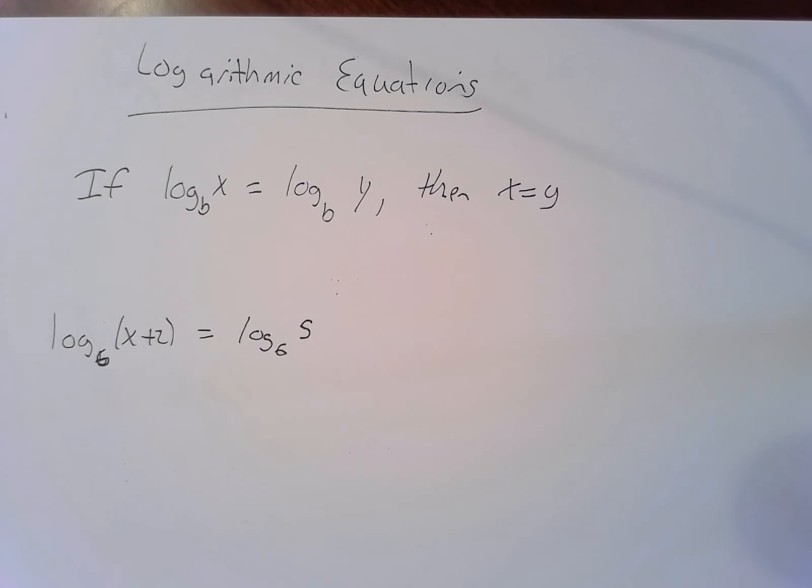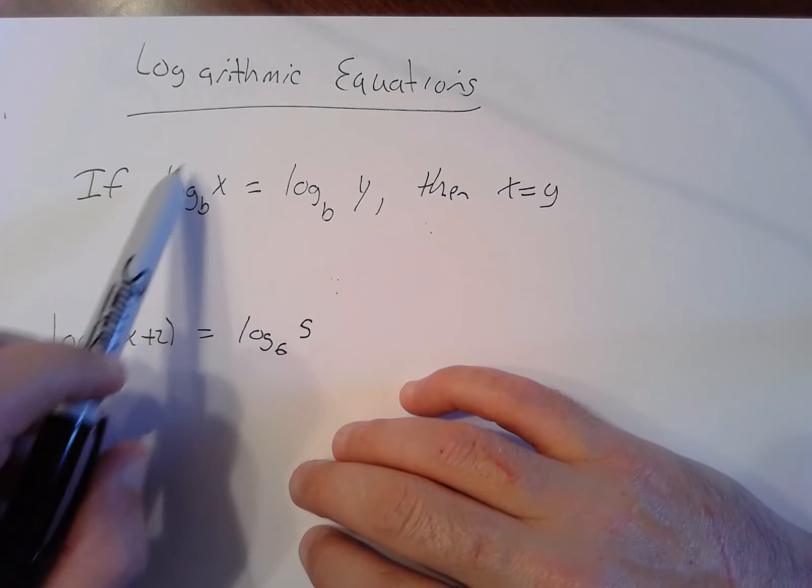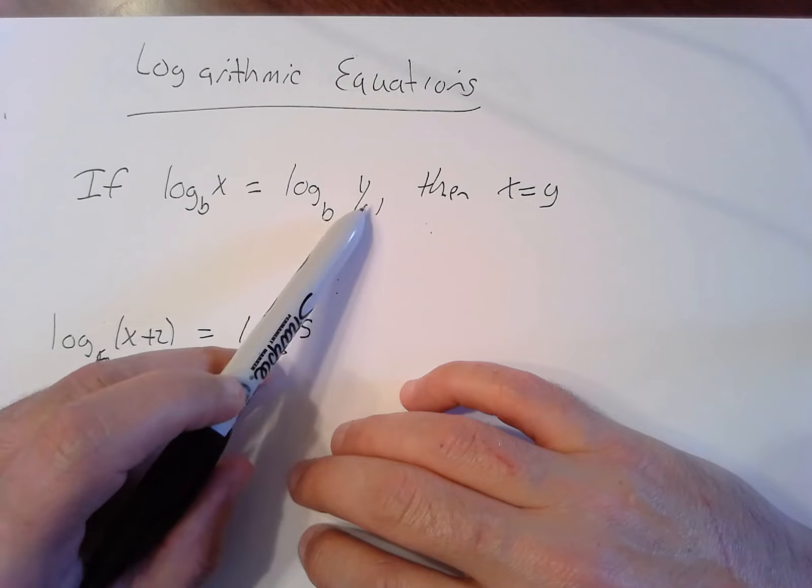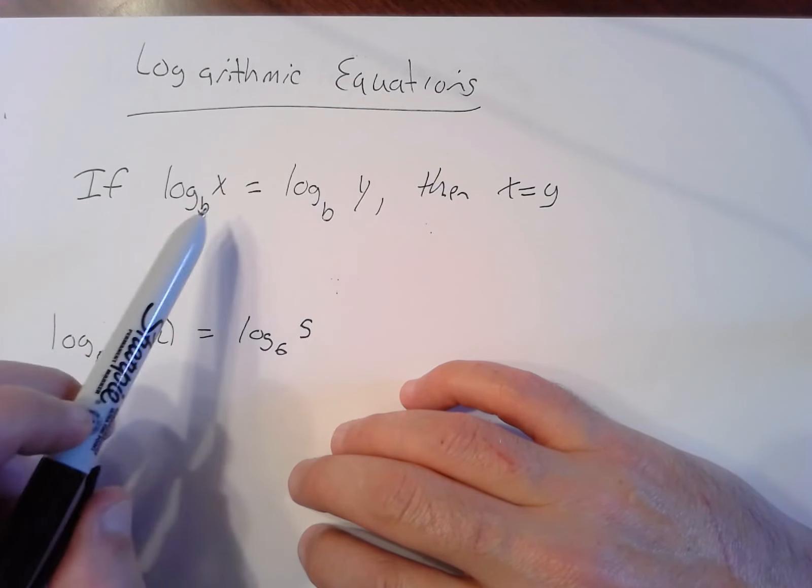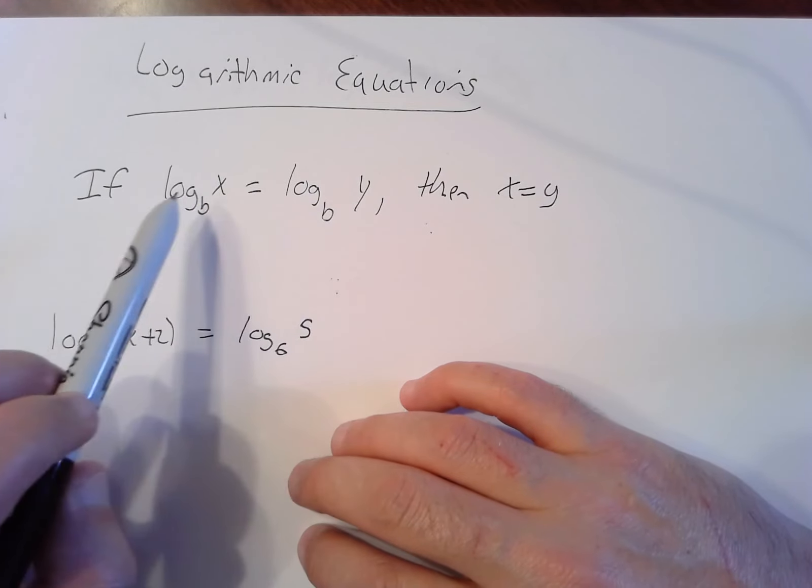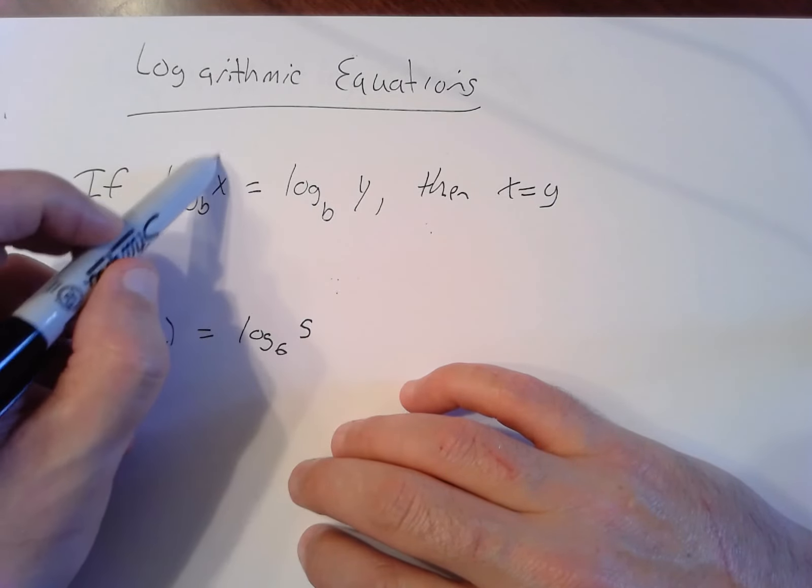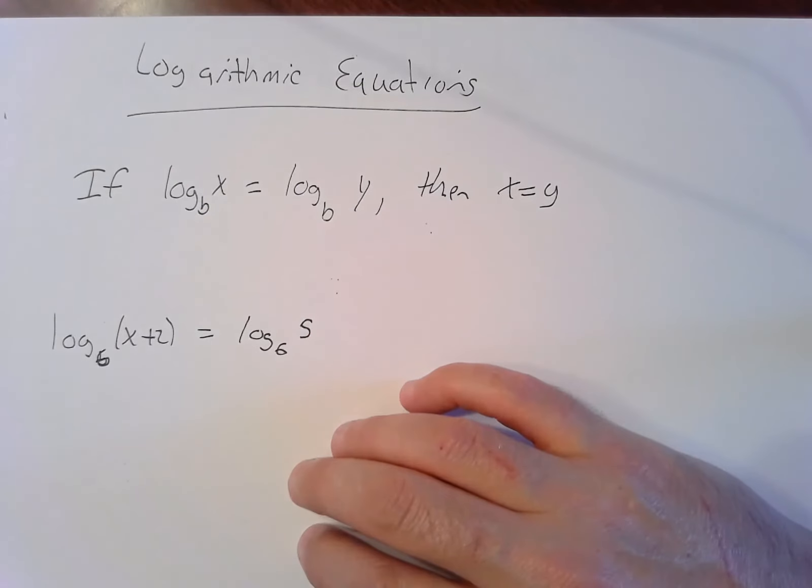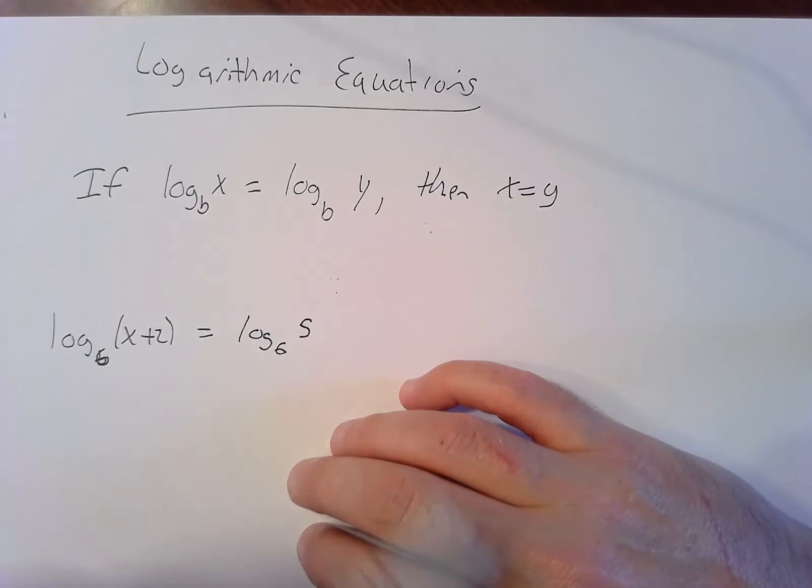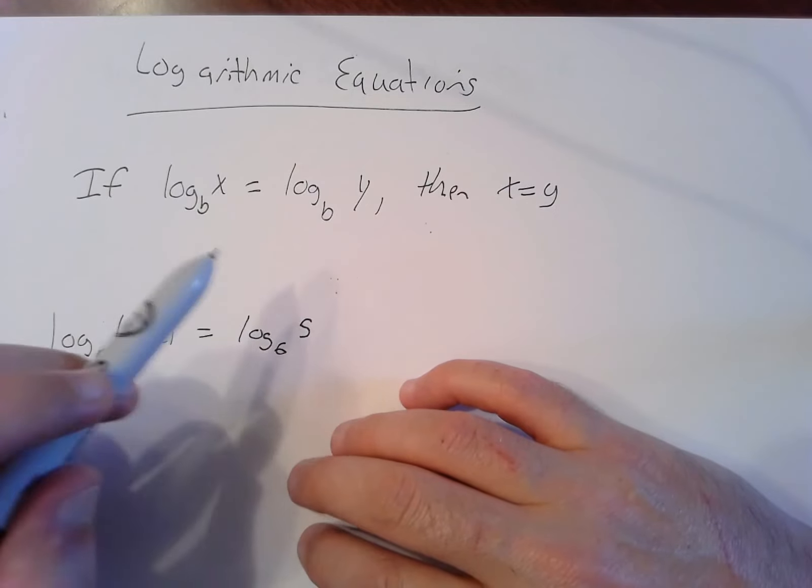When every single thing in the equation is a log, then it's possible to squish all your logs together and rewrite your equation so you have log base b of one thing equals log base b, same base has to be the same base, equals something else. If you have log equals log, the only way that's possible is if the insides are in fact equal because the log is a one-to-one function.